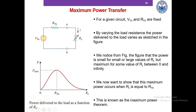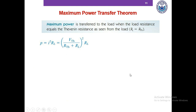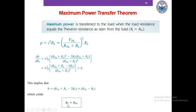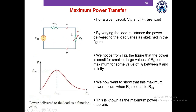When RL equals RTH the power delivered becomes maximum. We're going to derive this mathematically. Starting from the power equation, we differentiate with respect to RL and set the expression equal to zero. After algebraic manipulation we end up with RL minus RTH equals zero, meaning that when the load resistance equals the Thevenin resistance, the power delivered to the load is maximum. Note that this is the power of the load, not the power of the Thevenin resistance or the voltage source.